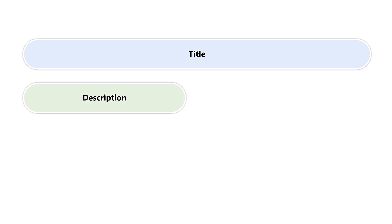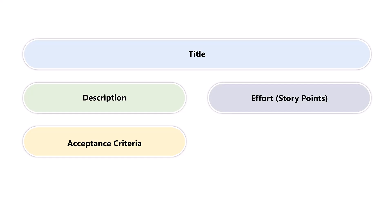Let's take a look at the key components of a user story. You want to have a title, a description with additional details, acceptance criteria with specific rules or scenarios that the user story needs to deliver, effort often calculated in story points, and a priority to help you effectively prioritize which requirements to focus on first.